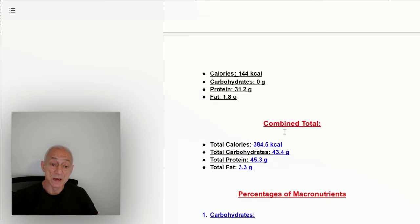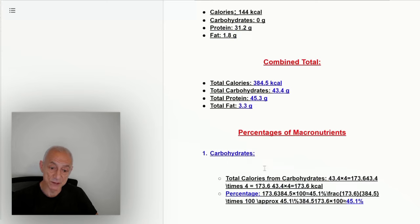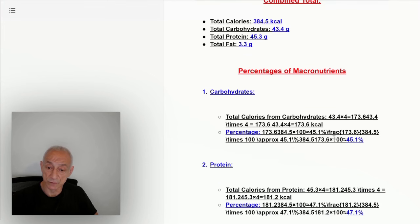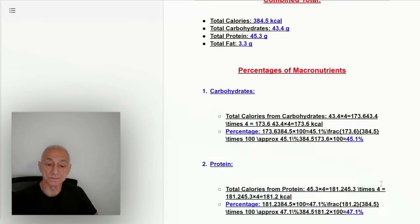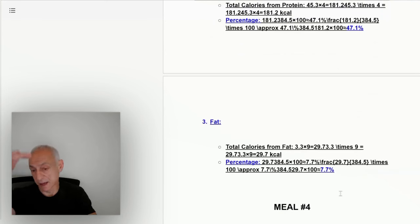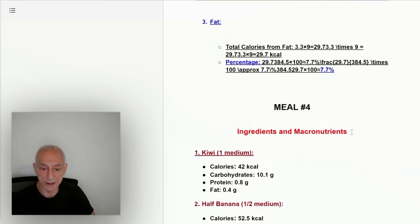Combined total is 385 calories, 43 to 44 grams of carbohydrates for this meal right here, 45 grams of protein. Again, the fat is very low. You can see the percentage of micronutrients relevant to this meal: carbohydrates 45%, protein 47%, and fat 7.7%. Again, give or take a percentage point either way.